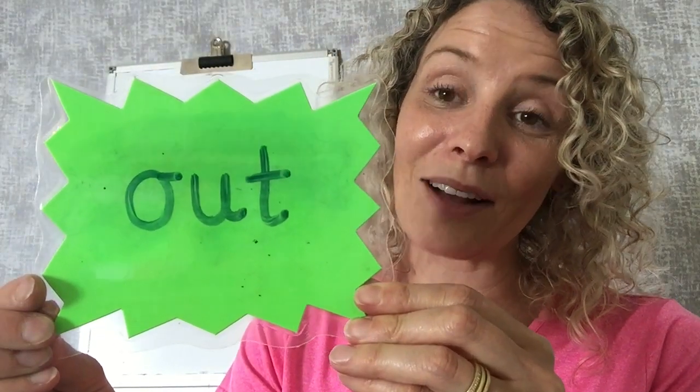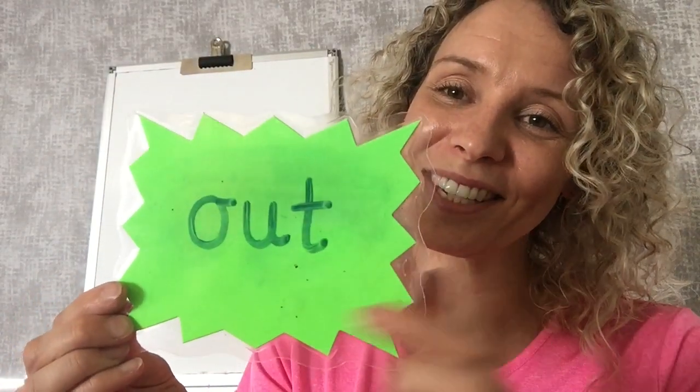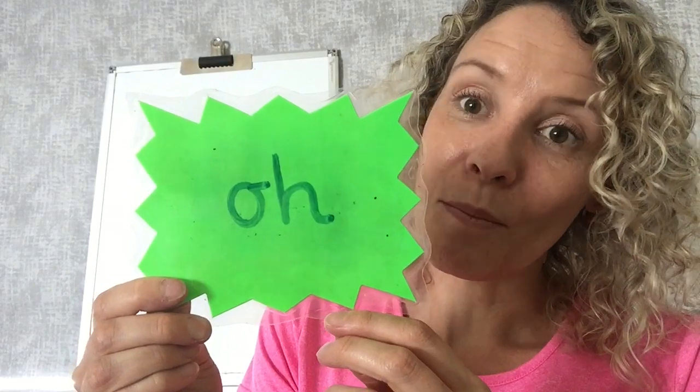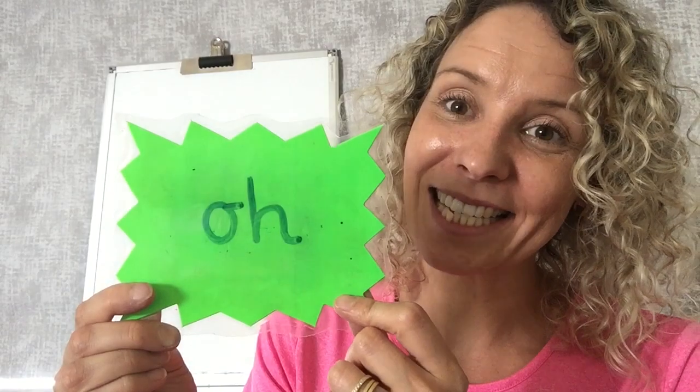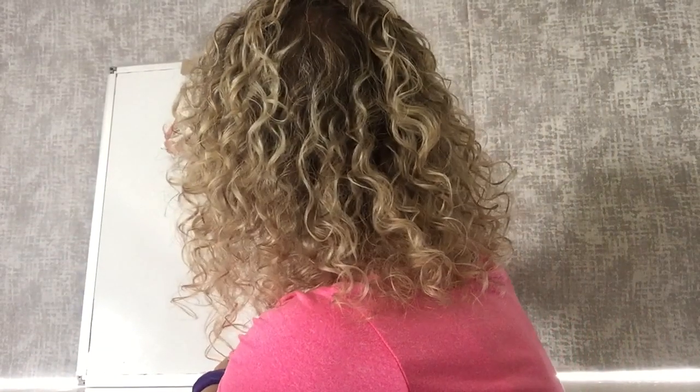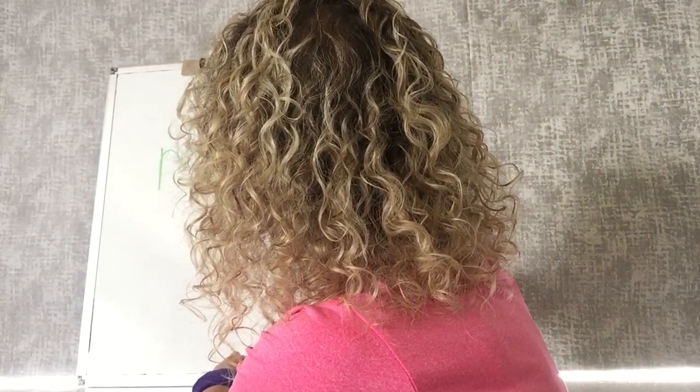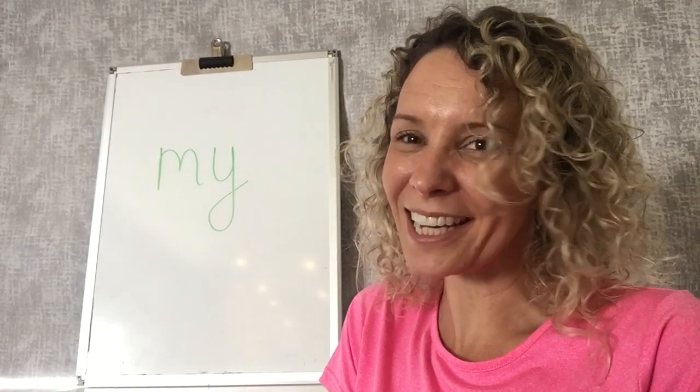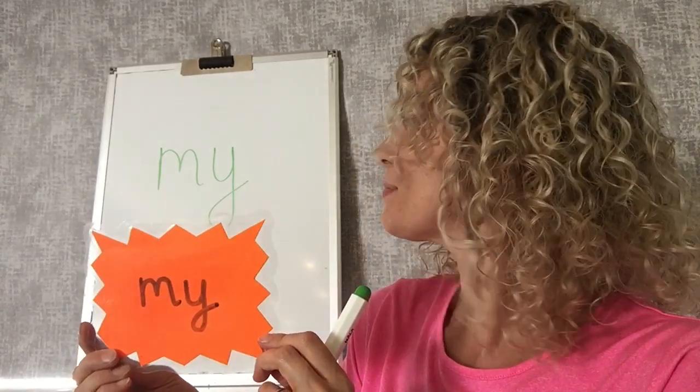Ready stars for your tricky star words? Here we go. Well done — it's 'out'. My turn: out. Your turn. Brilliant. And the next one — my turn: 'oh'. Your turn. Well done, fantastic. Now we're going to have a go at writing one of our tricky words. So here it is. We're going to look at it, we're going to say it — 'my' — going to cover it, we're going to write it, and we're going to check it. Did you have a go at writing it as well? Well done. Did you get the same as me? My. Well done.